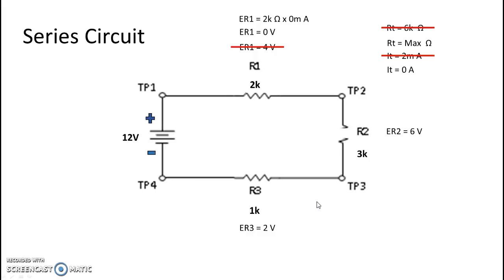So it's no surprise that R3 also has a voltage drop of 0 volts, which is of course if you're doing it the math way, 1k ohms multiplied by 0 current.